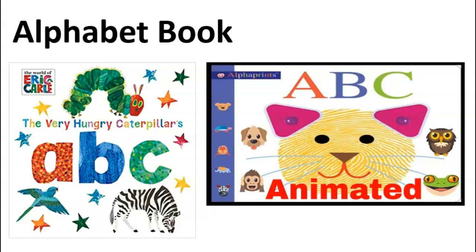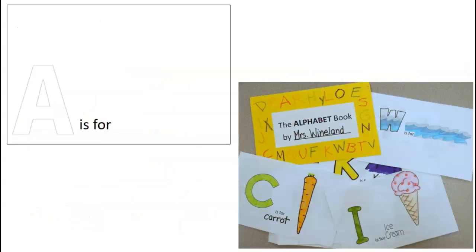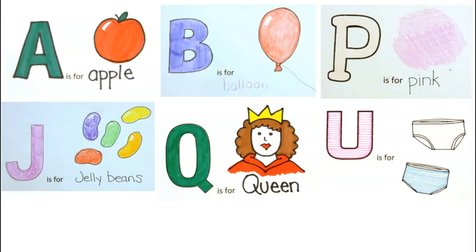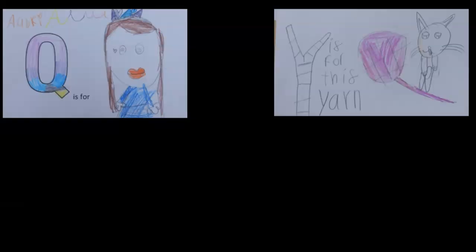A doesn't always have to be for apple — you can make A for whatever you want. When we start, I give them half sheets of printer paper that I have already printed with the outline 'A is for.' You can see that I also provide them with samples, and my book here is just a piece of construction paper folded in half. When I go over the setup — A is for apple, B is for balloon — when I show them U is for underwear, I always get a big laugh. This is some of my student work.